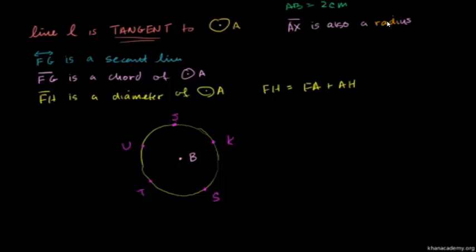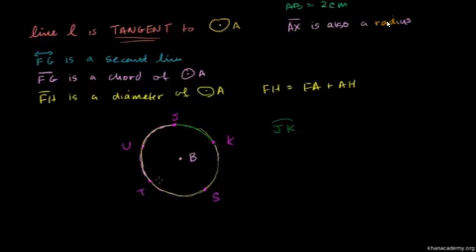You can imagine in everyday language we would call something like that an arc, and we also call it an arc in geometry. To specify this arc, we call it arc JK — the two endpoints on the circle — and you use a little curve notation on top instead of a straight line. Now you can also have another arc that connects J and K. This shorter path is the minor arc — it is the shortest way along the circle to connect J and K. But you could also go the other way around, all the way around the circle.